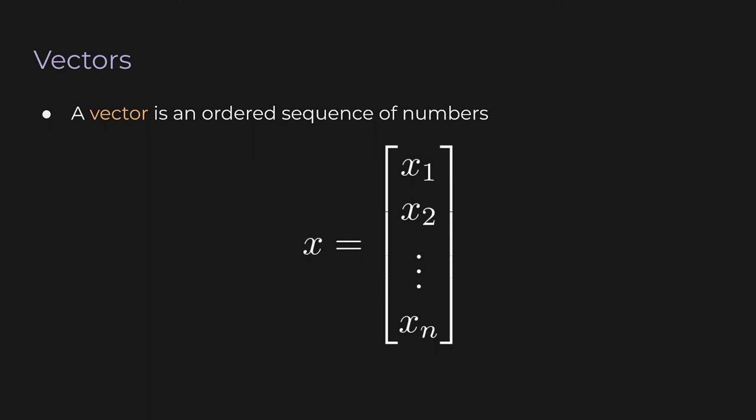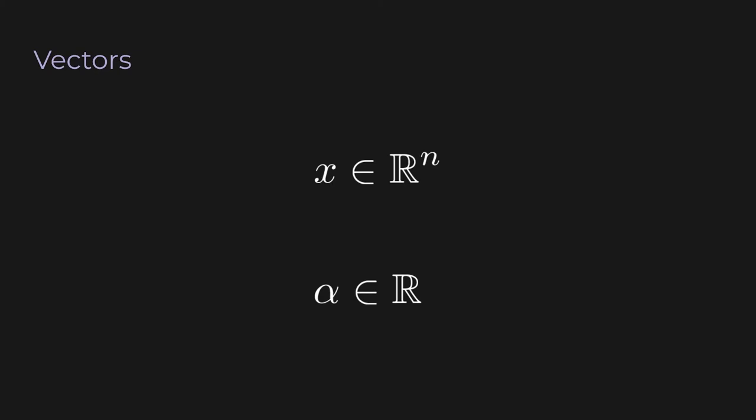Vectors really are just variables. Getting a little more abstract, we don't even need to specify the entries. We can write things like x ∈ ℝⁿ. The symbol ∈ is read as 'in', and ℝ is the set of all real numbers, with superscript N being the number of entries. So 'x in ℝⁿ' means x is a vector with N entries, and all those entries are real numbers.